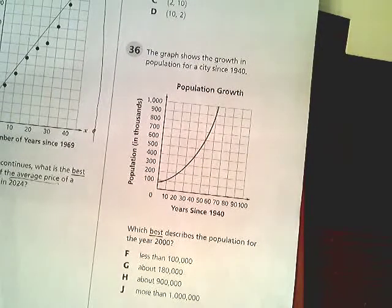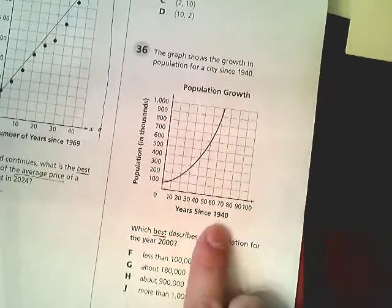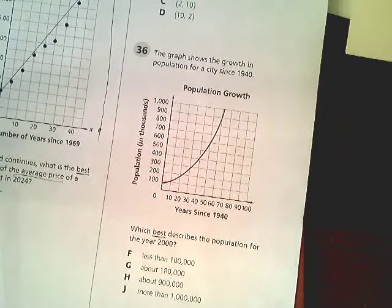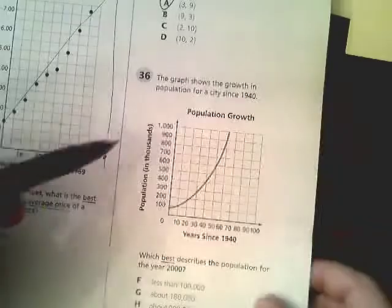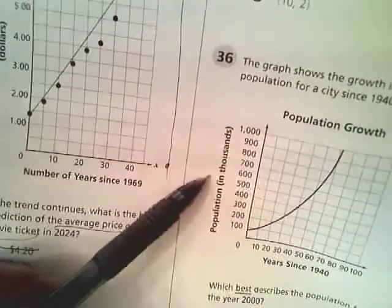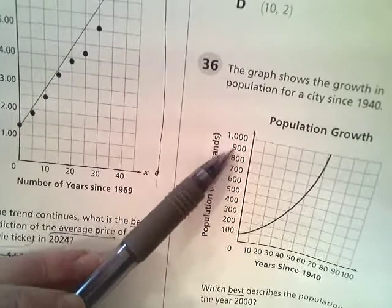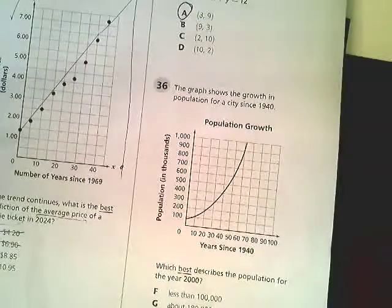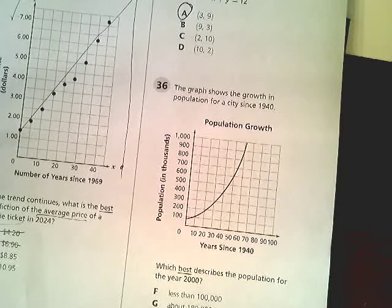It's important for us to look at two things in this question. Number one, the fact that the zero here is 1940, so we need to adjust for that when we try to find what 2000 is. Also, we need to make sure that we have our scales down. This is in thousands, so this is not 900, it's 900,000. That's important to know. Sometimes that gets kind of lost in the mix.